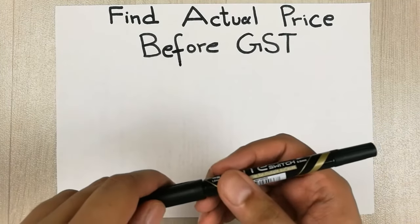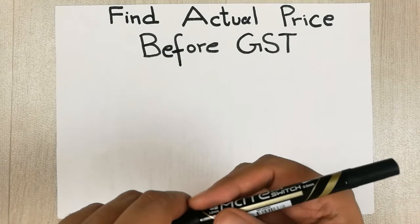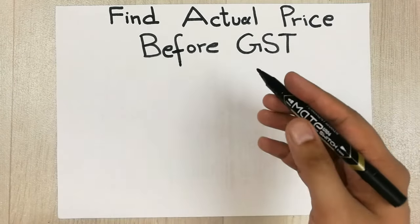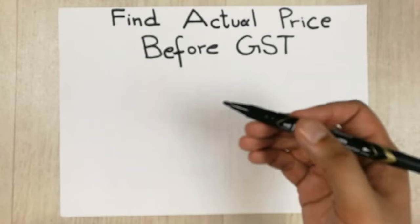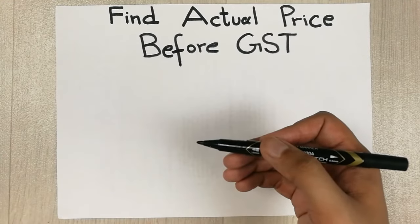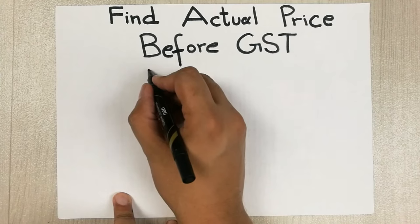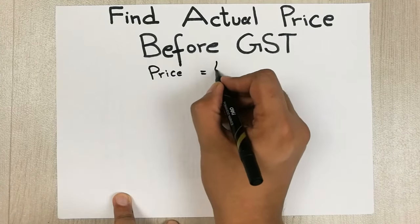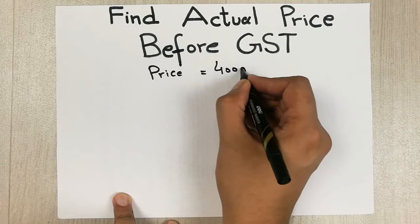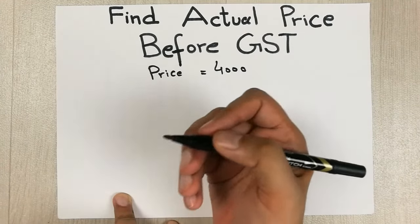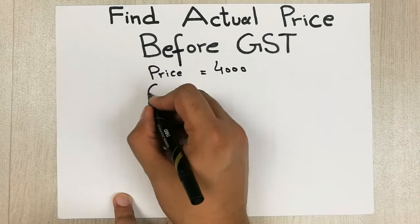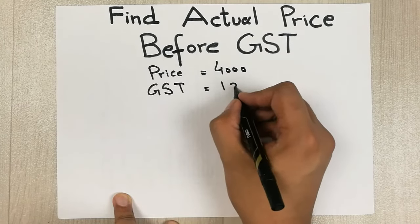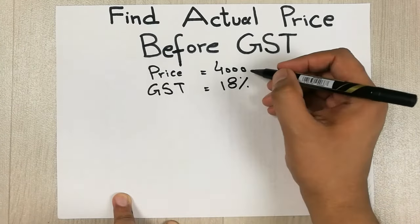Hello guys, I hope you are doing really well. In today's video I will show you how to find out the actual price before GST. For example, you go to a shop and you like some item and the price of that item is four thousand. You see on that item GST is also written and it says GST is 18 percent.